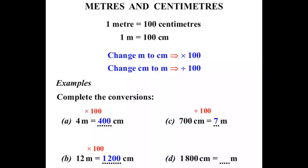1800 centimetres equals so many metres. Well we are changing from centimetres to metres. So to do that we divide by 100. So we have 1800 divide by 100. And again we just cancel off two zeros at the end. So our answer there is 18.